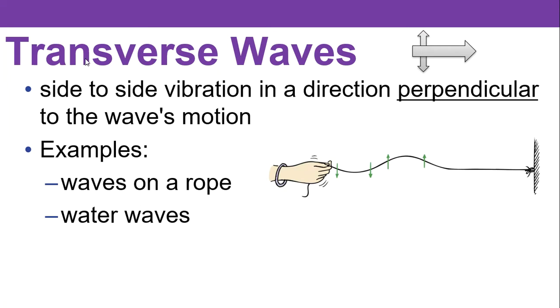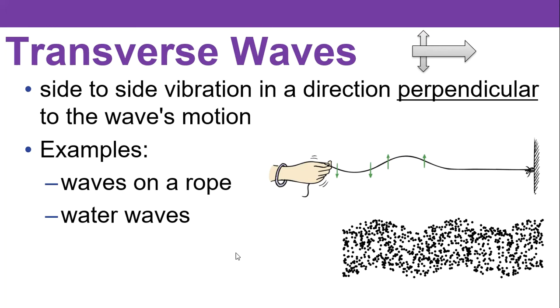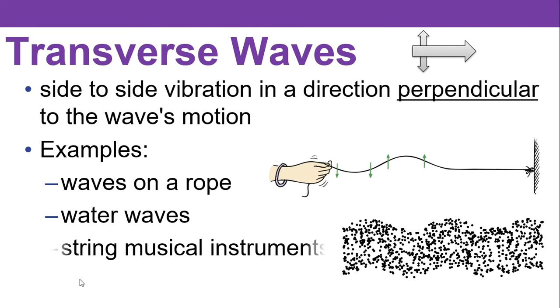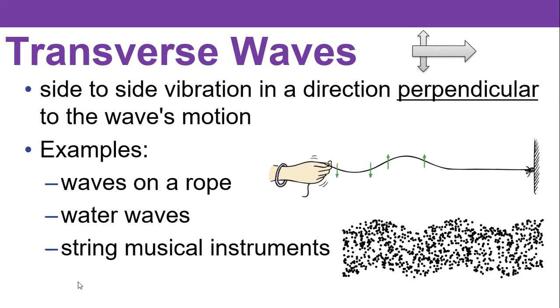So waves on a rope are transverse waves. Water waves are also good examples of transverse waves. Here the black dots represent water molecules, and if you keep your eye on one black dot you'll notice that it goes up and down, whereas if you watch the wave crest it moves toward the right. So up and down to the right, there's your perpendicular example. That sounds like a good multiple choice question.